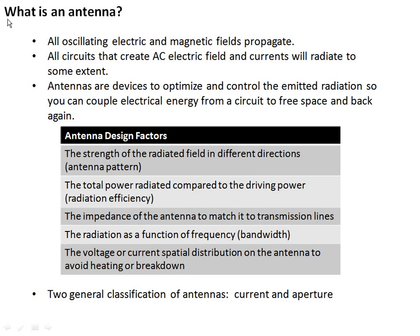Before we get started, it's probably worth asking: what is an antenna anyway? We've learned that all oscillating electric and magnetic fields propagate. They create the other version of themselves. A current creates a magnetic field, which if oscillating will create an electric field, and in turn a magnetic field, and so on. At some level, all circuits that create AC electric fields and currents are going to radiate, meaning create fields that couple energy away from the circuit and into space. Antennas are just devices that we use to optimize and control the emitted radiation, so that you can couple electrical energy from a circuit to free space and back again in the way you want to.